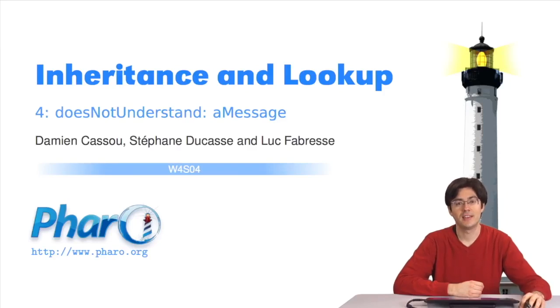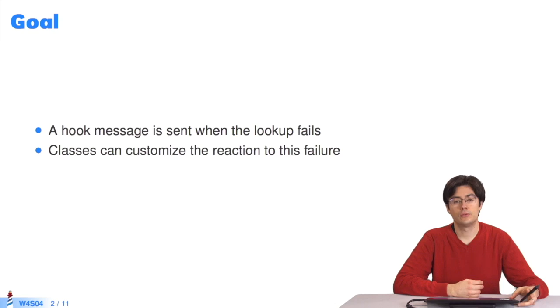Hello, welcome to the fourth sequence on inheritance and lookup. We will now learn what happens when the algorithm does not find a method. As you will see, classes can add processing to handle the fact that a lookup message was not understood.